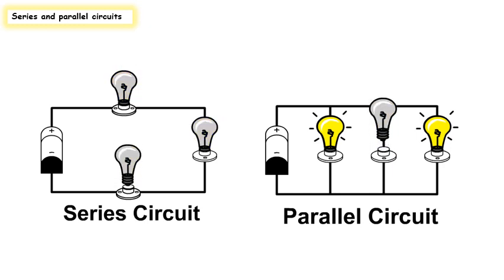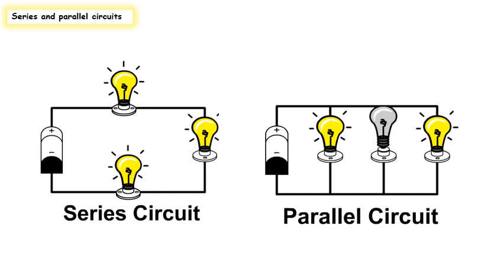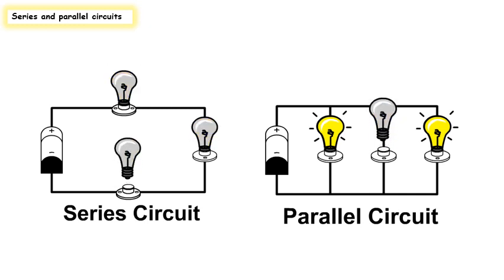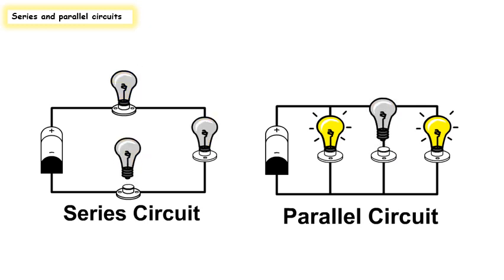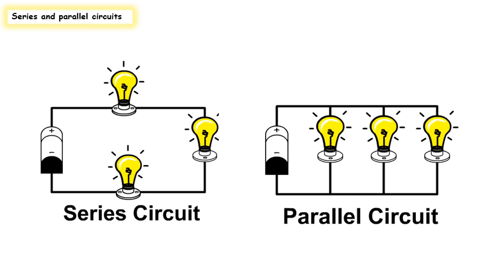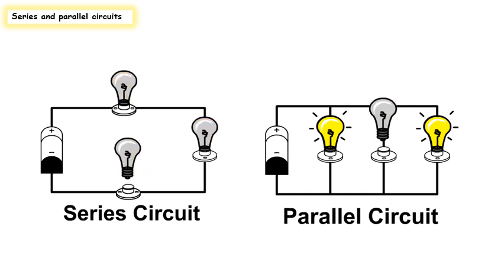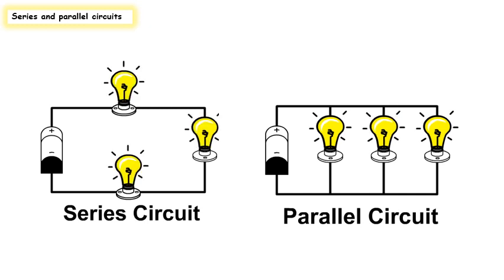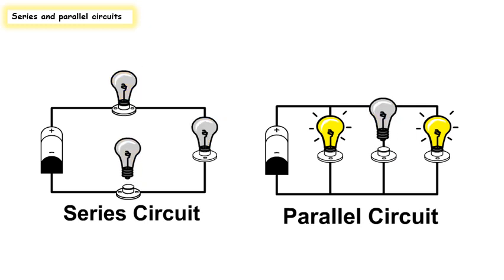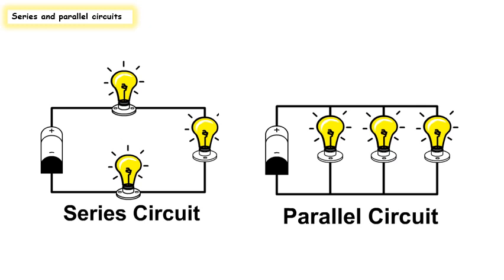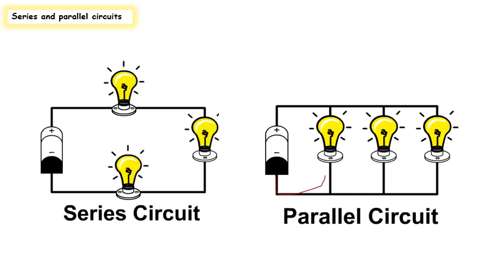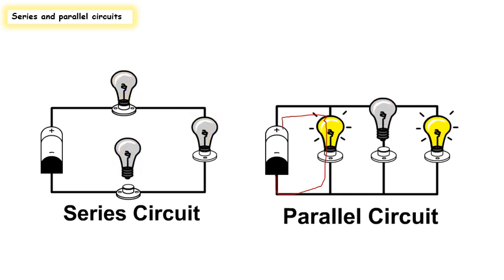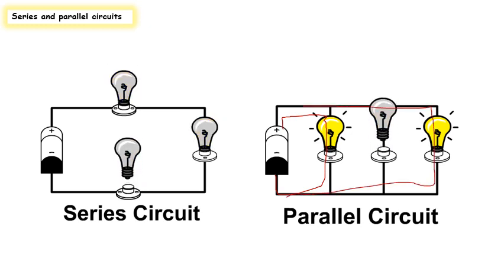In a parallel circuit, we have more than one path for the electric current to follow. If the electrons are stopped from flowing along one path, they will keep moving across another. Here we have three closed paths — the electric current can flow through these three bulbs and light all of them. If one bulb is missing or damaged, the electric current can still travel through the other bulbs, so the remaining bulbs stay on.